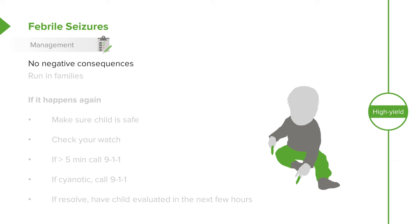There are no negative consequences to these seizures — it's not going to be a problem. You should counsel families about a few things. First, febrile seizures do run in families. In fact, don't be surprised if at the end of the visit somebody fesses up that when they were a kid, they also had seizures.